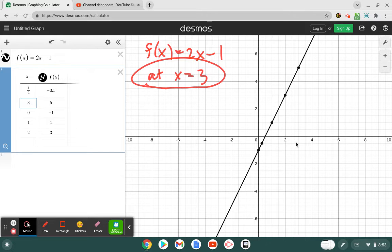So my output, my y value, is 5, which is that guy right there. Because I've got it defined, I can also just ask Desmos for f(3), and it returns the answer 5.